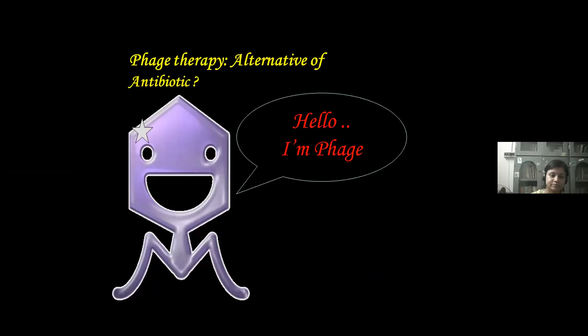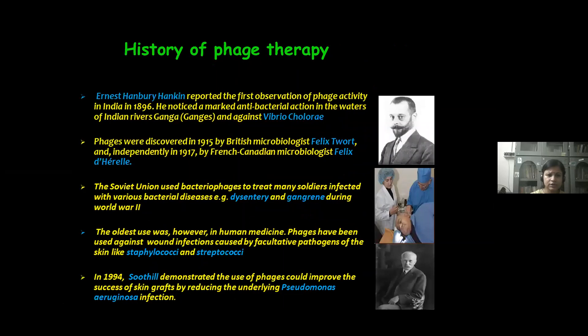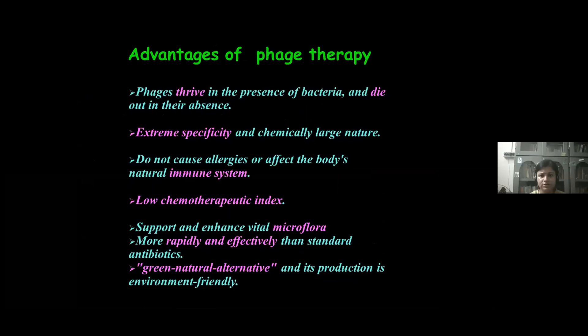Phage therapy can be a good substitute for this. Phage therapy is the therapeutic use of bacteriophages to treat pathogenic bacterial infections. In history there are several instances of using phage therapy. First, Ernest Hanbury Hankin and British microbiologist Felix d'Herelle discovered bacteriophages. Then bacteriophages were used during the Second World War in Soviet Russia for the treatment of gangrene and wound infections, and also for staphylococcal and streptococcal infections.